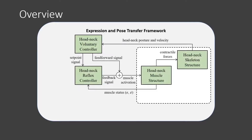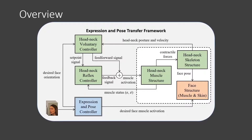Our framework has three components: a biomechanical musculoskeletal head-neck system labeled in green, a biomechanical face simulator labeled in red, and a facial expression and head pose controller labeled in blue. The expression and pose controller can be pre-trained offline using a synthetic dataset and produces desired face muscle activation and head movement signals given an input image or video for the biomechanical models to make expression and pose.